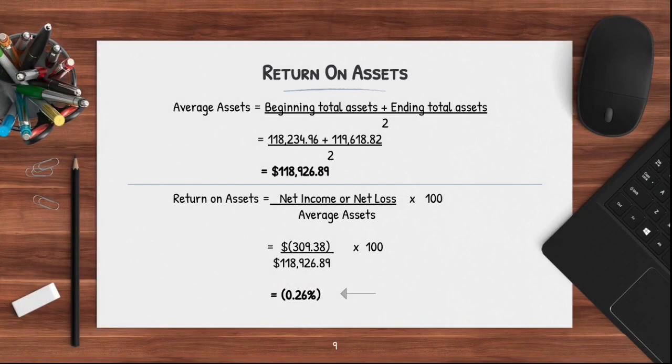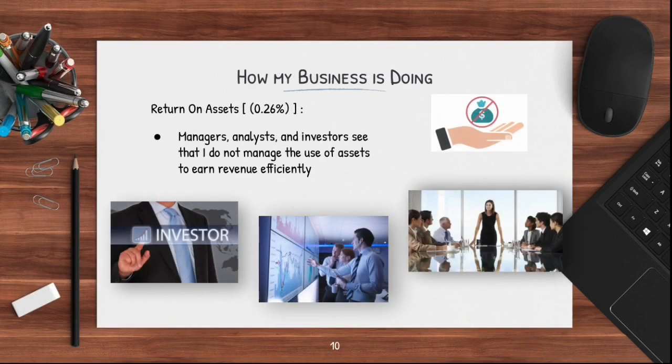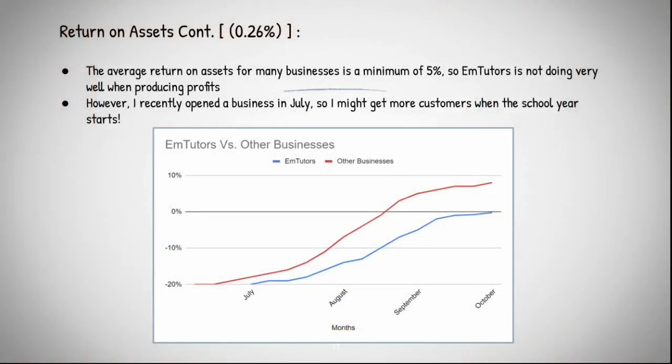After dividing my business's net loss by its average assets, I got a percentage of negative 0.26% as my return on assets. I was really surprised to see this value because, as opposed to the previous calculations, this tells managers, analysts, and investors an idea as to how I produce profits. By the look of the percentage, it shows that I do not manage the use of the assets to earn revenue efficiently. Compared to other businesses, the average is a minimum of 5%, so having a negative 0.26% makes my business look bad. But since I recently opened in July, I might get more customers when the school year starts.